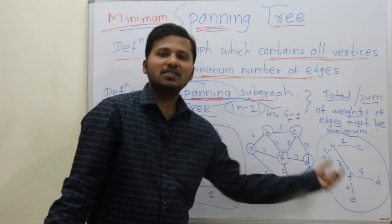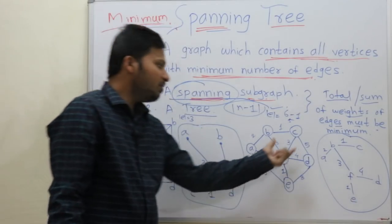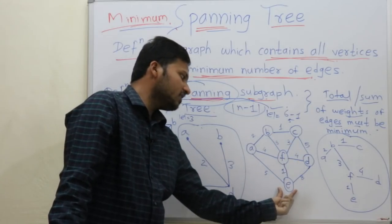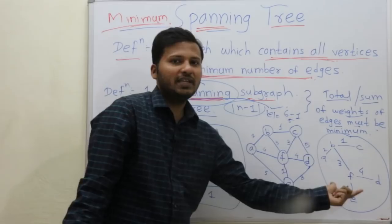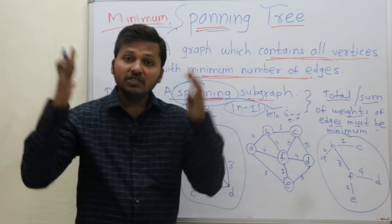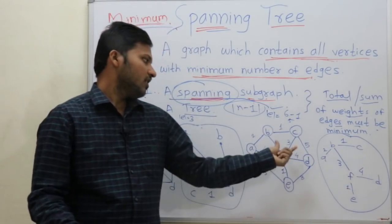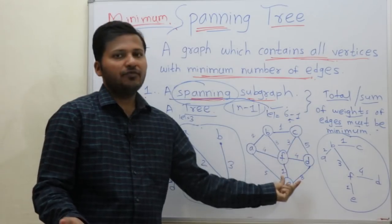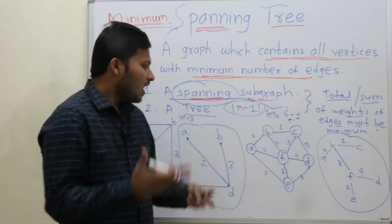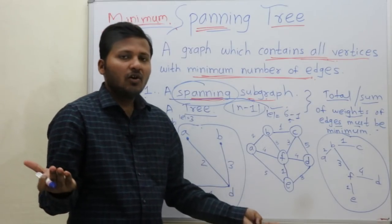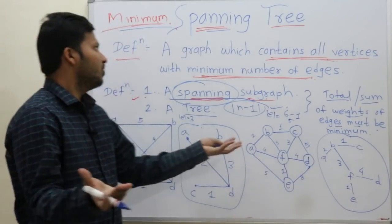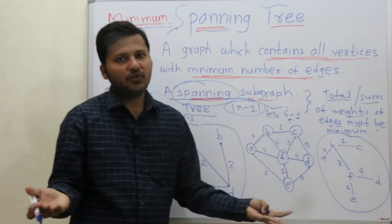A minimum spanning tree is formed. As we can see by our eyes, we can calculate it manually. But if there are thousands of edges and thousands of vertices, we cannot do this on paper or on board.